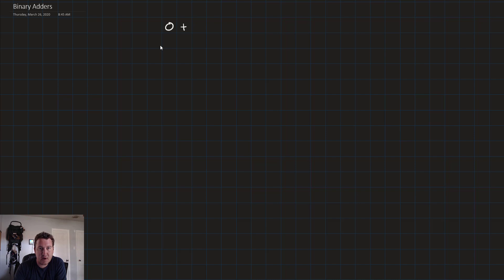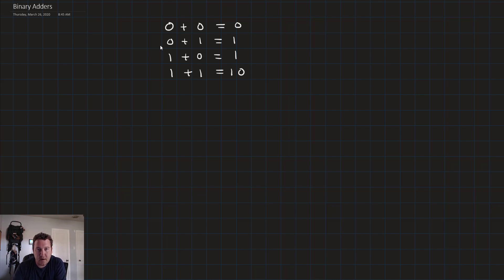The first thing we want to do before we look at adding numbers of any size of bits, we just want to add one-bit numbers. So one bit to one bit. 0 plus 0 is equal to 0. 0 plus 1 is equal to 1. 1 plus 0 is equal to 1. And 1 plus 1 is equal to 2, which is 1, 0. So the takeaway here is that to add two one-bit binary numbers, we need two bits of output: a sum to hold most of the results, and a carry bit.